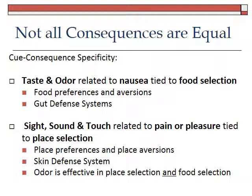The flip side of that is that sight, sound, and touch are related inherently to pain and pleasure, and that is tied to place selection. Animals can form place preferences and place aversions — places they want to be and places they want to avoid — because of the relationship of sight, sound, and touch to the pain or pleasure felt in an environment. That's part of the skin defense system.